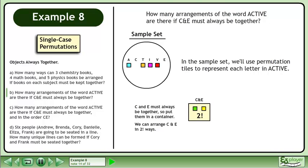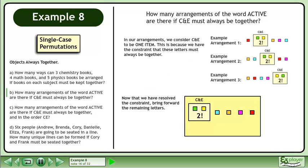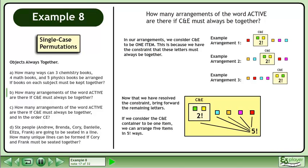We can arrange C and E in 2 factorial ways. Now that we have resolved the constraint, bring forward the remaining letters. In our arrangements, we consider C and E to be one item, because we have the constraint that these letters must always be together. If we consider the C and E container to be one item, we can arrange 5 items in 5 factorial ways.